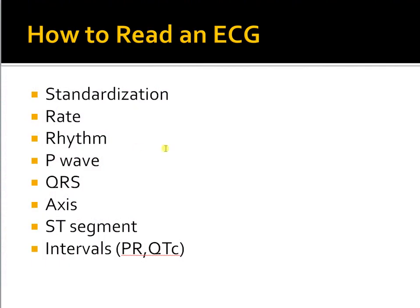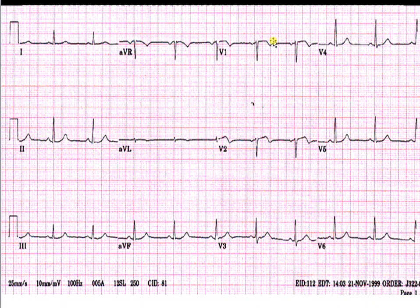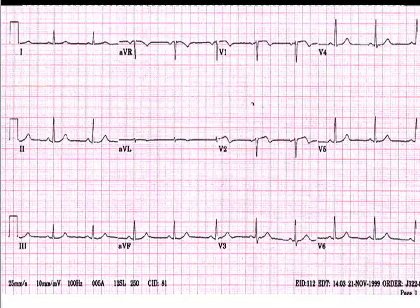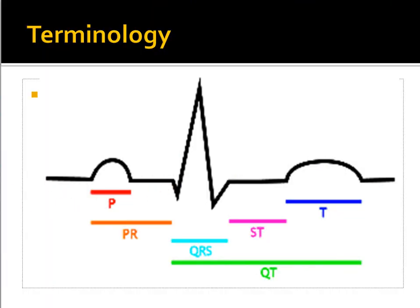Next, assess P wave abnormality, best seen in Lead 2 or V1. You can detect right atrial enlargement or left atrial enlargement. Right atrial enlargement appears as a tall P wave of more than 2.5 small squares in Lead 2, whereas left atrial enlargement shows as a negative component of the P wave in V1 greater than one millimeter, or notching of the P wave in Lead 2. The PR interval indicates conduction from the SA node to the AV node; it is prolonged in first degree AV block. Normal value is up to 200 milliseconds — anything above that is a first degree AV block.